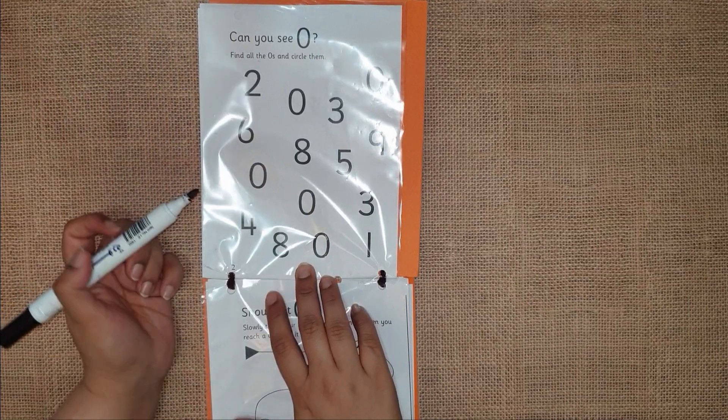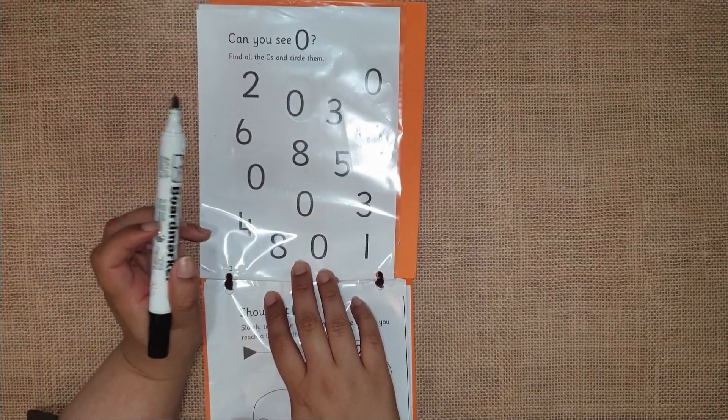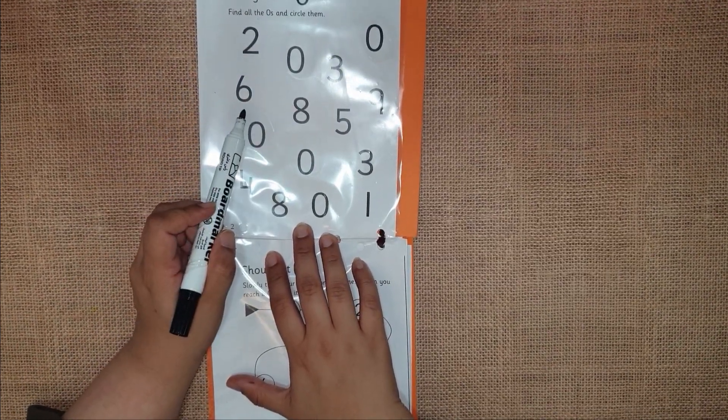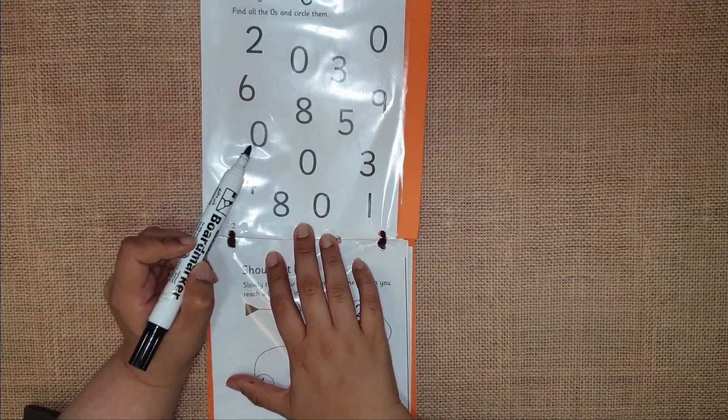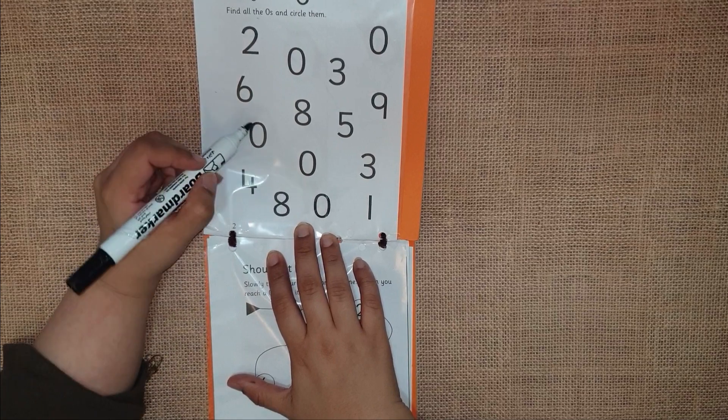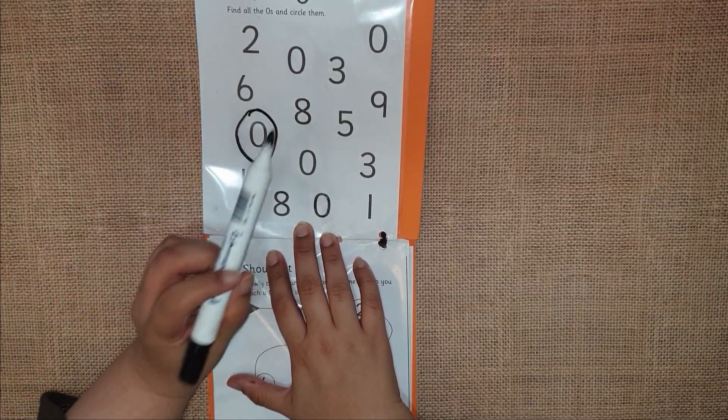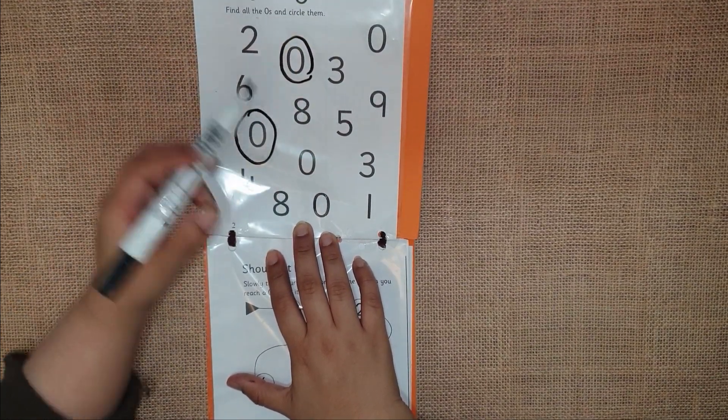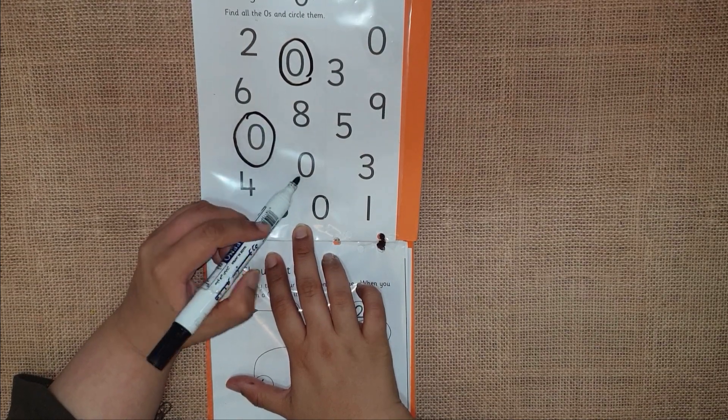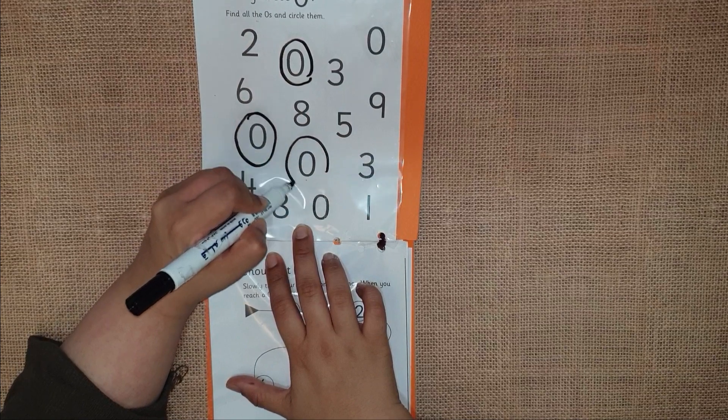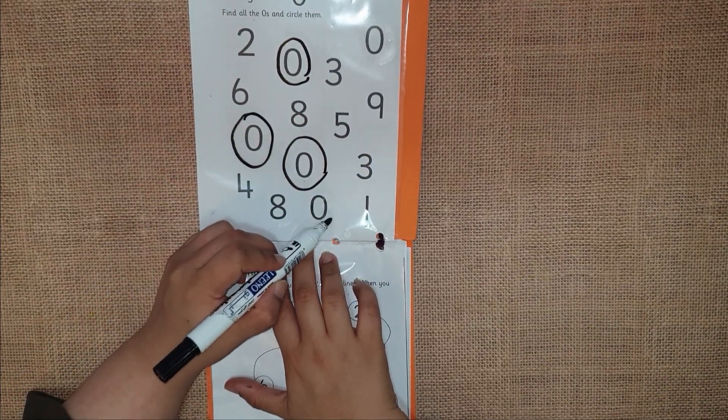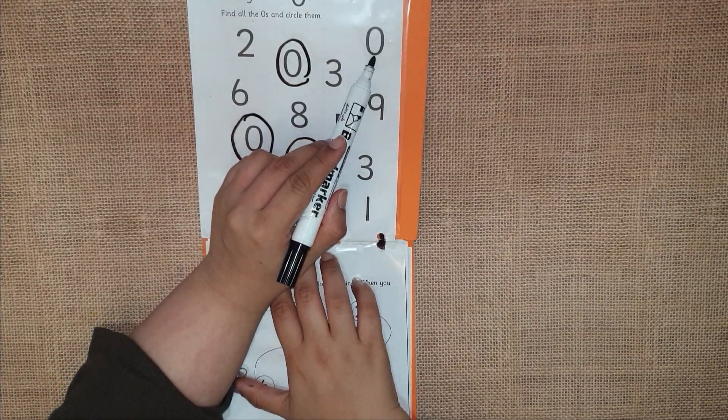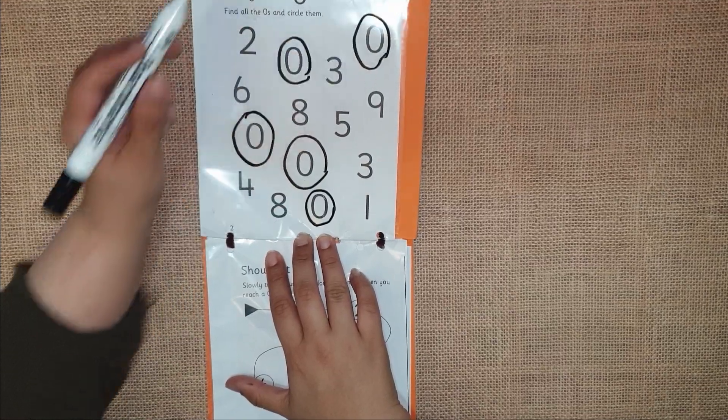Can you see zeros? Then you have a circle over here. What number is this? Is this zero? No, it's not. Is this zero? Zero, yes, let's circle it. Is this zero? Yes, let's circle it. Is this zero? No, it's not. Is this zero? Yes. Is this zero? Yes. Is this zero? No, it's not. Is this zero? Yes. You will find zero from this and you will circle it.